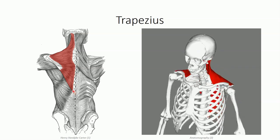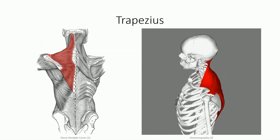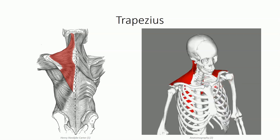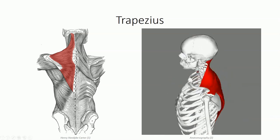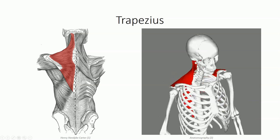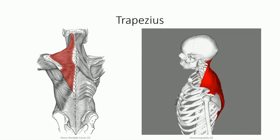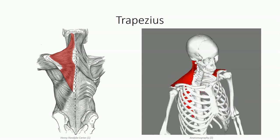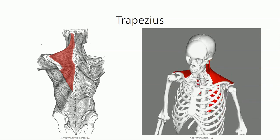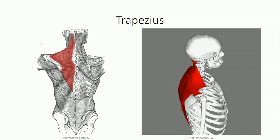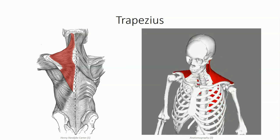The muscle fibers project laterally, converging upon the spine of the scapula and wrapping around anteriorly to also insert on the acromion process and lateral third of the clavicle. The vascular supply to trapezius is through the transverse cervical and dorsal scapular arteries. Trapezius is innervated by the 11th cranial nerve, commonly known as the spinal accessory nerve — the one exception to the rule that most extrinsic muscles are innervated by branches off the ventral primary rami.